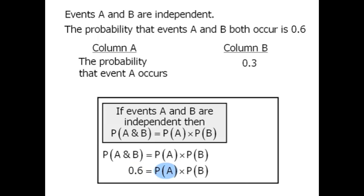Now since this probability and this probability must both be less than or equal to 1, we can conclude that each probability must be greater than or equal to 0.6.